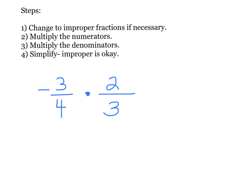Let's try a problem out. Our first one is negative 3 fourths times 2 thirds. The first thing you need to do is change to improper fractions if necessary. These are both normal fractions, so you don't need to change them. The second step is to multiply the numerators.